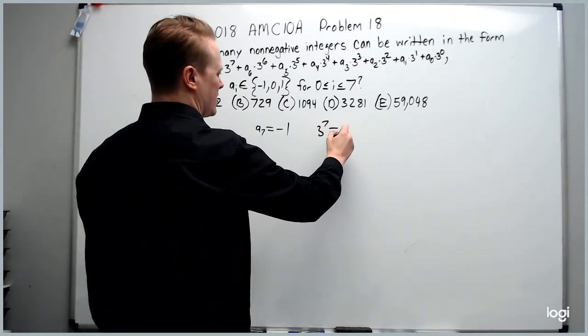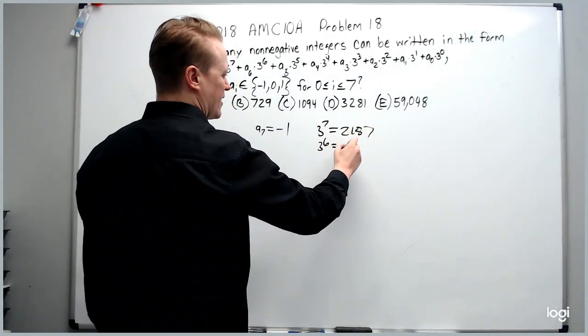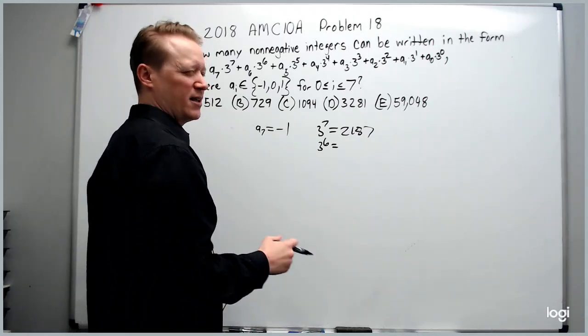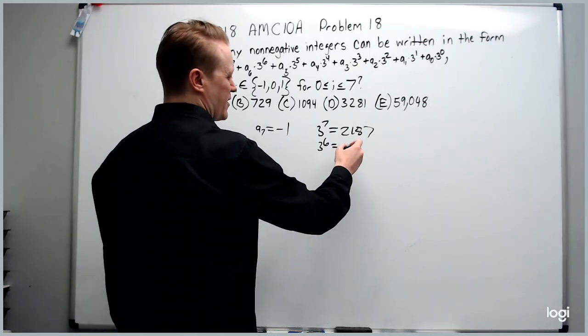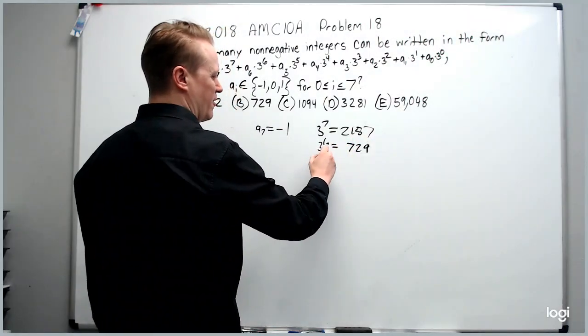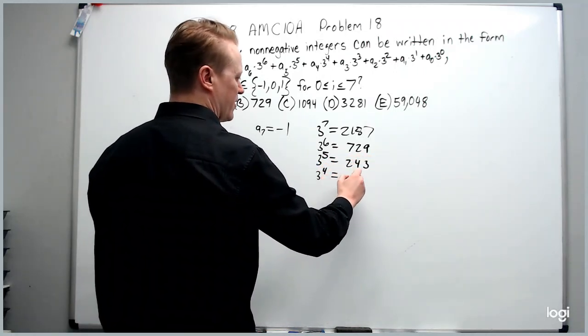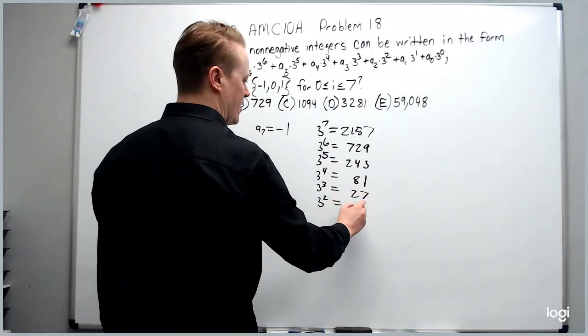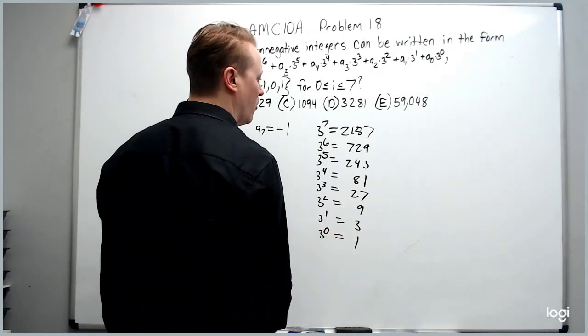3 to the 7th ends up equaling 2187. 3 to the 6th is equivalent to 9 to the 3rd. You should probably know your perfect cubes through about 12. 3 to the 6th is 9 to the 3rd, which is 729. 3 to the 5th is 243. 3 to the 4th is 81. Third is 27, squared 9, first 3 obviously, and the 0 power always 1.